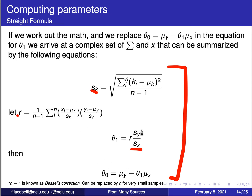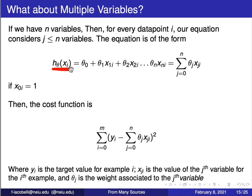If you have many variables, the straight line becomes a plane: theta 0 plus theta 1 x1 plus theta 2 x2 and so on for all variables. The cost function changes accordingly to the squared difference between ground truth and predicted values. We assume theta 0 has an x next to it, but that x is 1, which will be helpful later.